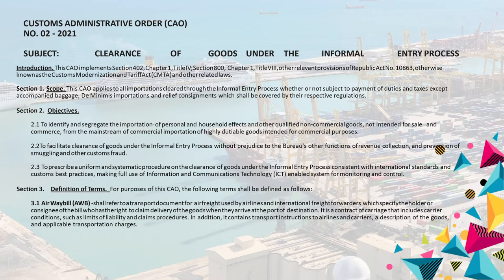Introduction. This CAO implements Section 402, Chapter 1, Title 4, Section 800, Chapter 1, Title 8, and other relevant provisions of Republic Act No. 10863, otherwise known as the Customs Modernization and Tariff Act (CMTA), and other related laws.